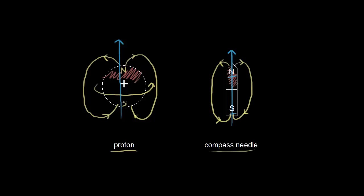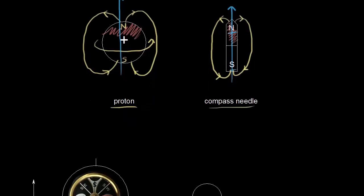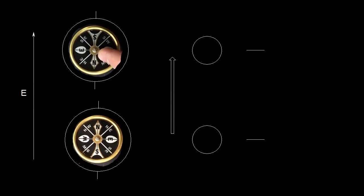Let's go back to the idea of the compass needle. If you put it into the Earth's magnetic field, the compass needle is going to point north — the magnetic moment points north. Opposite poles attract, so if the north pole of our compass needle points toward the geographic north pole, that geographic north pole must actually be the magnetic south pole of the Earth. Conversely, the magnetic north pole of the Earth is at the geographic south.